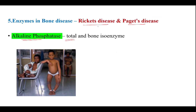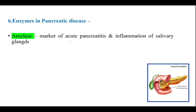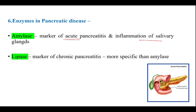Next, enzymes in bone disease: alkaline phosphatase isoenzymes — both total and bone isoenzymes — are raised in rickets and Paget's disease. In pancreatic disease, amylase is a marker of acute pancreatitis and inflammation of salivary glands. Lipase is a marker of chronic pancreatitis and is more specific than amylase. These are some of the enzyme patterns in disease. Thank you.